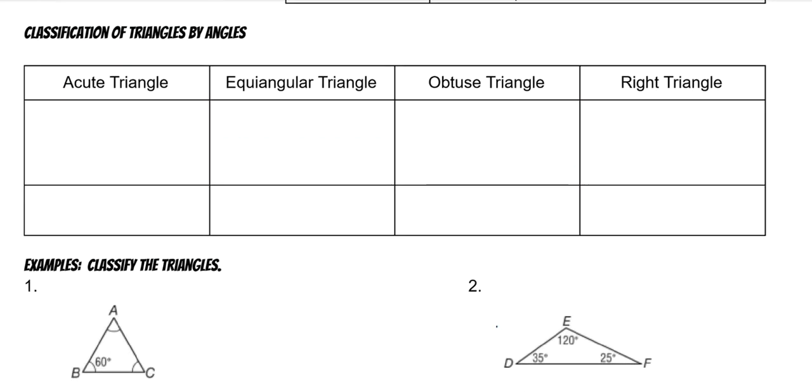All right, classifications by angle. So an acute triangle is a triangle where all angles are less than 90 degrees.